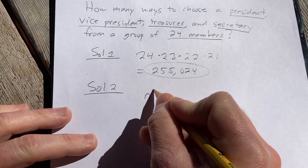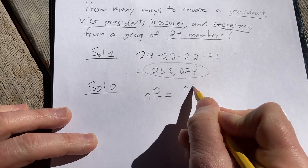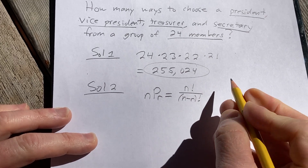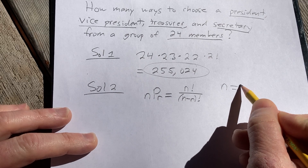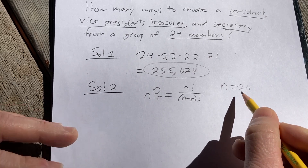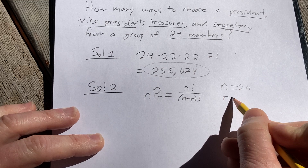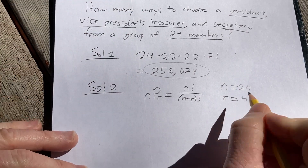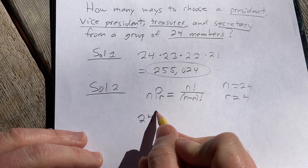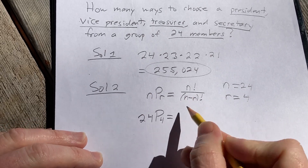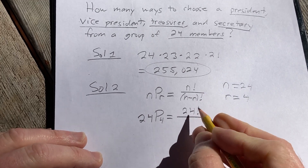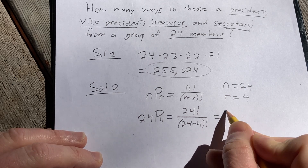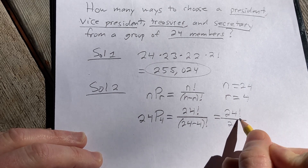The formula is NPR, and this is equal to N factorial over N minus R factorial. In our particular example, N is 24. We have 24 distinct objects, distinct members, and we want to select four of them where the order matters because the positions are different. So R is 4. So this is 24P4, which is 24 factorial over 24 minus 4 factorial, which is 24 factorial over 20 factorial.